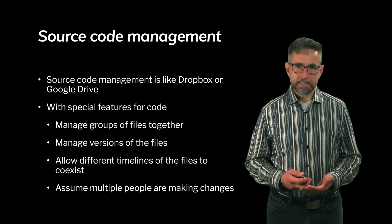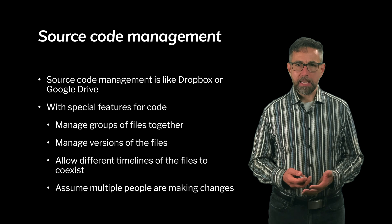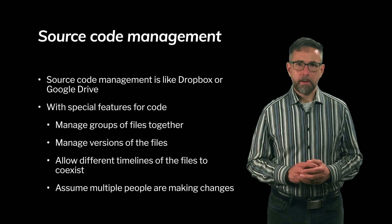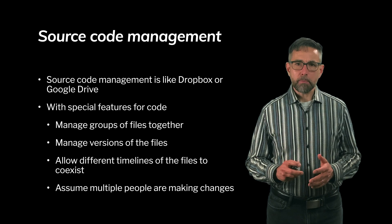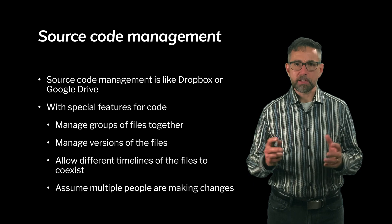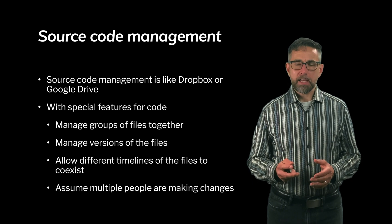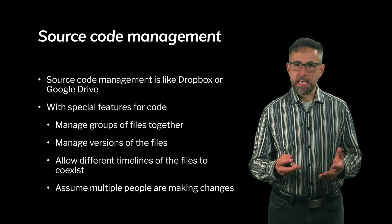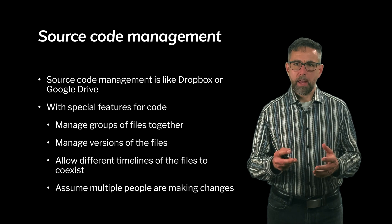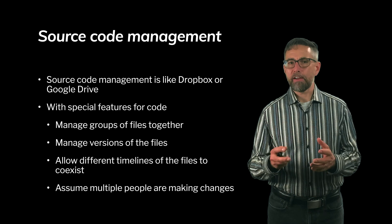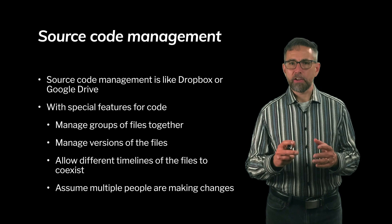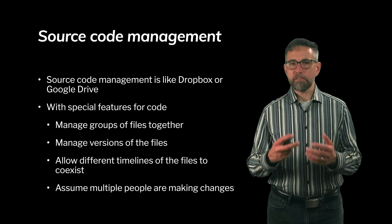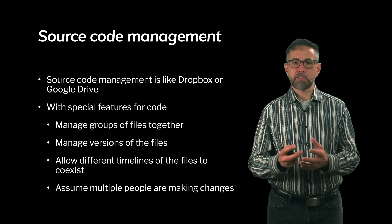One way it differentiates itself is it considers groups of files together, whereas Dropbox and Google Drive just think of individual files by themselves. Another way is that source code management systems keep track of versions of groups of files together. For example, you might have a group of 80 files and call that version one, then change two of those files and call that version two, and change two other files and call that version three. So source code management systems keep track of changes in files and versions of the collections of files together.